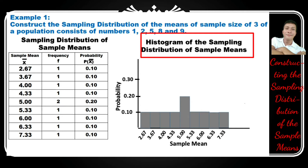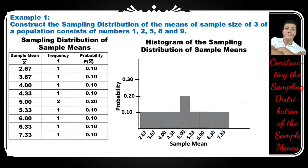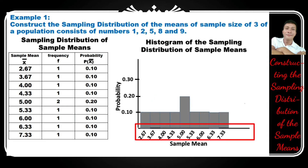Another figure is the graph or histogram of the sampling distribution of sample means. On the horizontal axis is the sample mean, on the vertical axis is the probabilities. The bars in the histogram represent the probability of each mean.